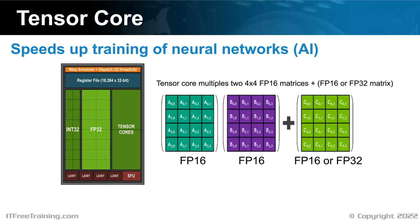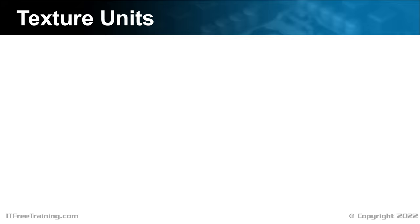Having just two Tensor Cores per SM allows users to get a taste for the technology. If you are running an AI-based application, you can try them and see how much faster they make things. We are also starting to see AI used in generating computer graphics — this is probably NVIDIA's way of developing a new market for their processors.